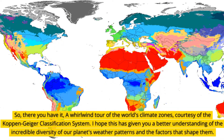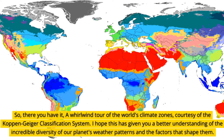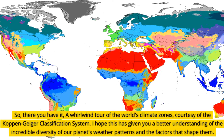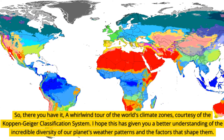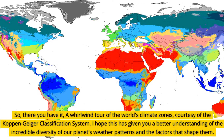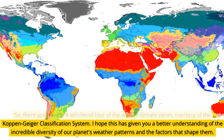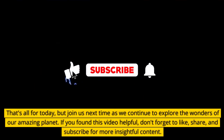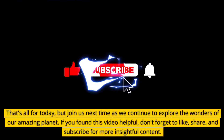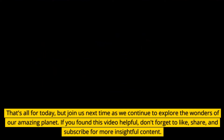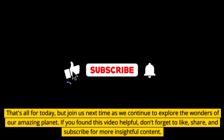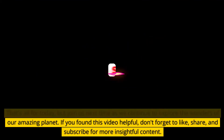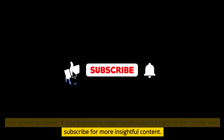So, there you have it — a whirlwind tour of the world's climate zones, courtesy of the Köppen-Geiger Classification System. I hope this has given you a better understanding of the incredible diversity of our planet's weather patterns and the factors that shape them. That's all for today, but join us next time as we continue to explore the wonders of our amazing planet. If you found this video helpful, don't forget to like, share, and subscribe for more insightful content.